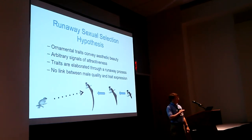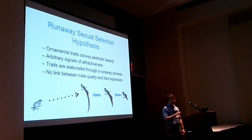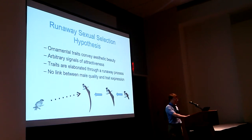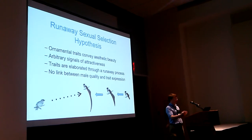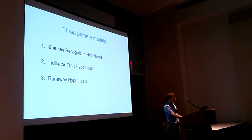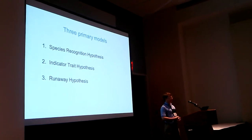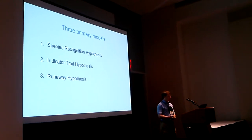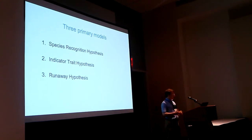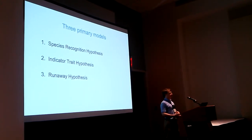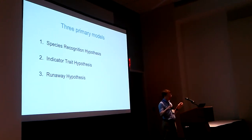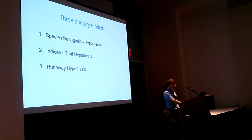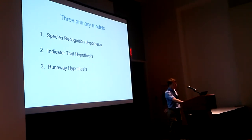All of these models have been worked out in detail in mathematical and logical treatments. There's empirical support for species isolation and indicator models, not so much for runaway, but it's very well supported mathematically. These are the three primary models. There are other models - sensory exploitation, chase-away, and others - that could be brought in, but we gain great benefit by starting from these three that have been the focus of most evolutionary biology treatments and are broadly considered the most likely explanations for ornamentation in animals.